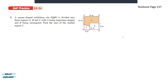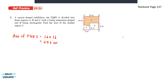A square-shaped exhibition site PQRS is divided into three regions A, B, and C, with A being trapezium-shaped and B being rectangular. Find the area of the shaded region C. First, let's find the total area of PQRS. Since PQRS is a square and the side is 16, the area is 16 times 16, which is 256 meter square.